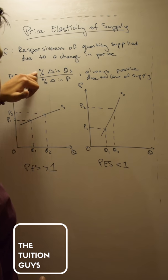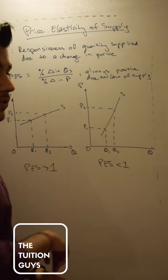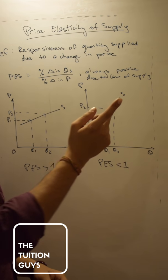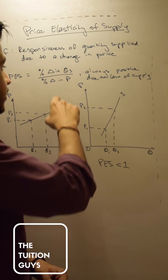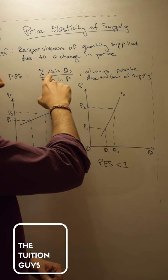It's calculated by finding the percentage change in quantity supplied divided by the percentage change in price. Again, I remind you from the last class, remember that this triangle over here means delta. So percentage delta, or percentage change in quantity supplied divided by percentage change in price.